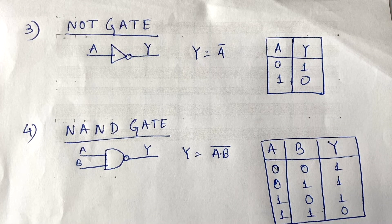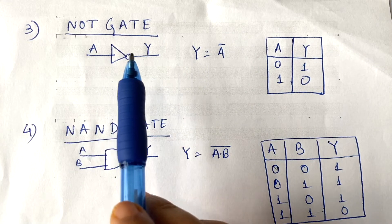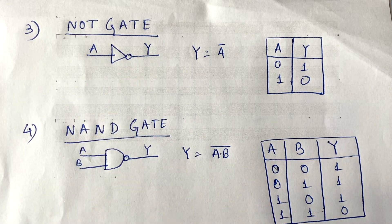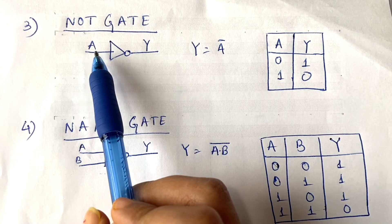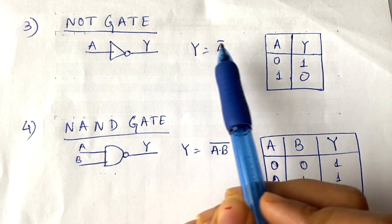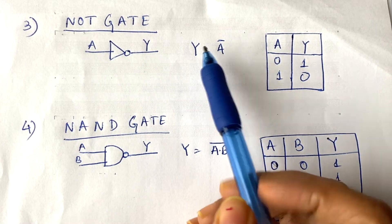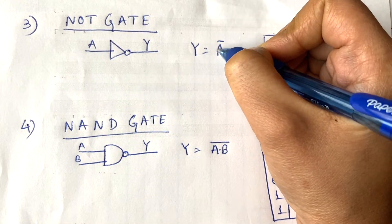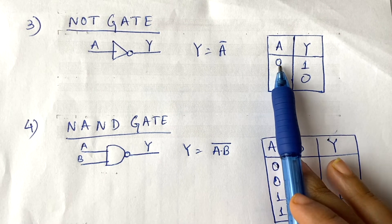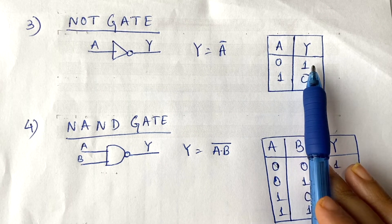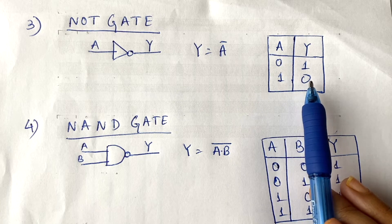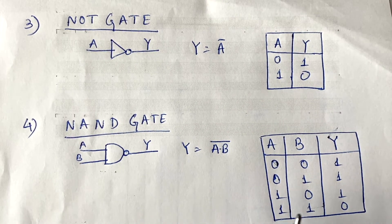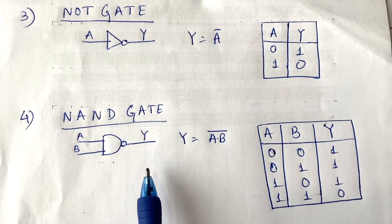Now we will move to the NOT gate. The NOT gate does the opposite of whatever input you provide. Suppose A is the input — Y will be the complement of A. When we provide 0 it gives 1 as output, and if we provide 1 it gives 0 as output.